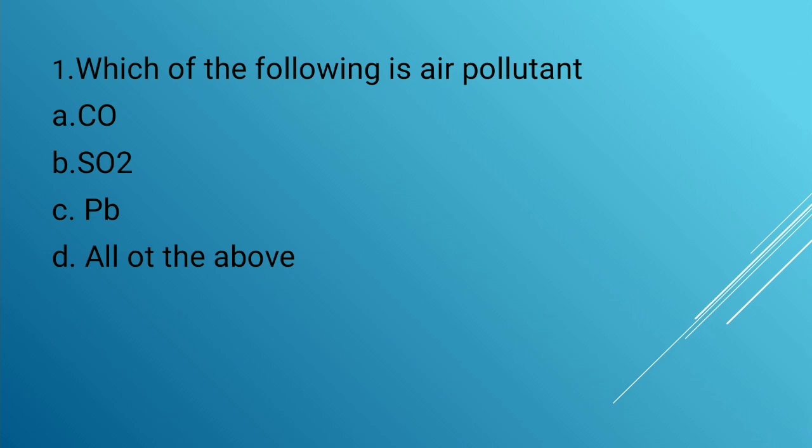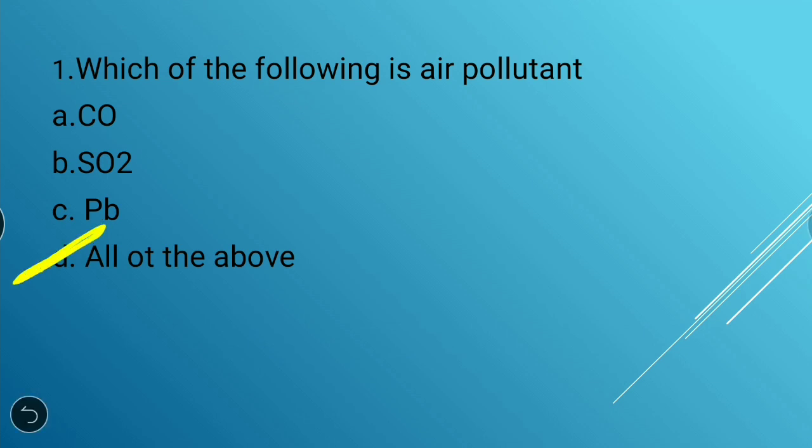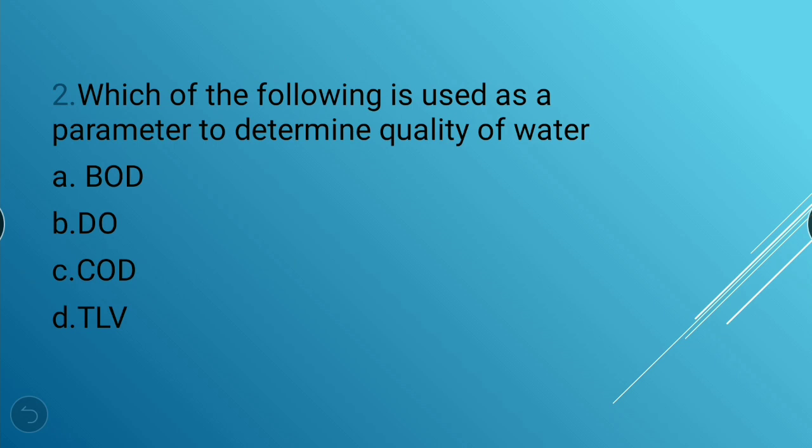Options are CO (carbon monoxide), SO2 (sulfur dioxide), and lead. The answer is all of the above. CO, SO2, and Pb — all these are air pollutants.